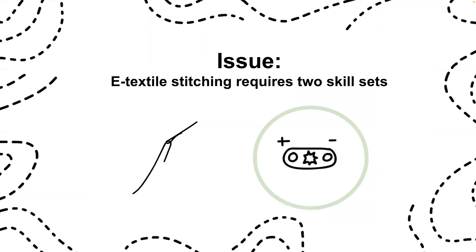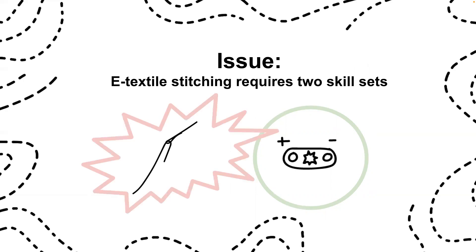With HCI and creativity support tools for e-textiles, the focus is on the second skill set. There are tools to, for example, confirm that a planned stitching design will have components in the right location with the correct polarity. But there's a lack of tools to support the first skill set — the tacit skills such as stitching — and successful systems are dependent on both.